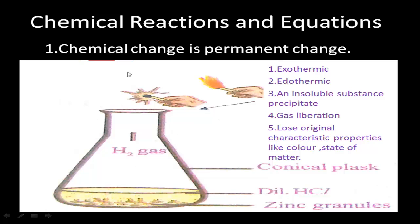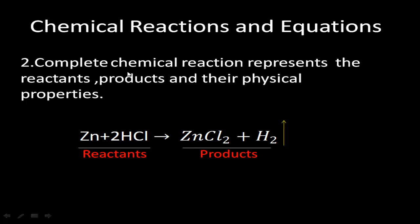The chemical reaction for this is: Zn + 2HCl → ZnCl₂ + H₂. Zinc and HCl are the reactants, while zinc chloride and hydrogen are the products.